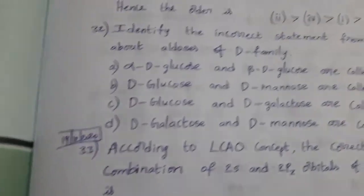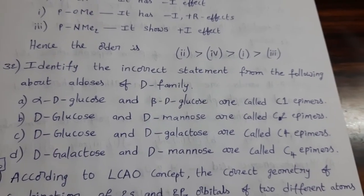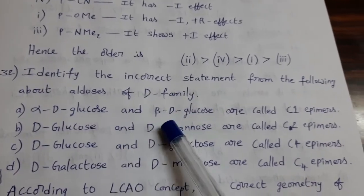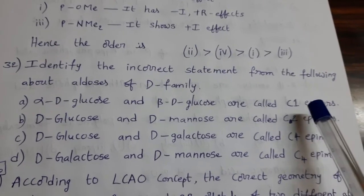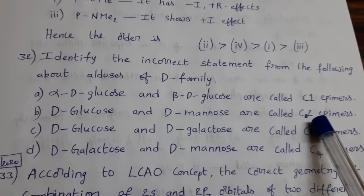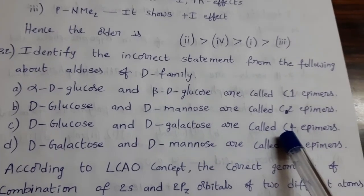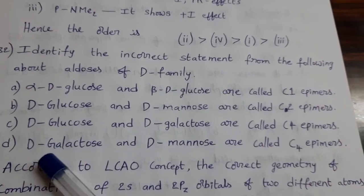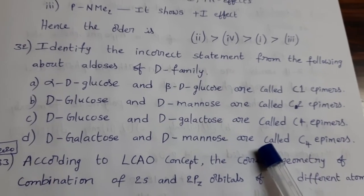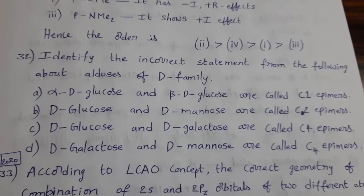Identify the incorrect statement from the following about aldoses of D family. Alpha D glucose and beta D glucose are called C1 epimers - this is correct. D glucose and D mannose are called C2 epimers - this one also correct. D glucose and D galactose are C4 epimers - option C also correct. D galactose and D mannose are called C4 epimers - this option is incorrect. This is not correct. Option D is the answer for this question.